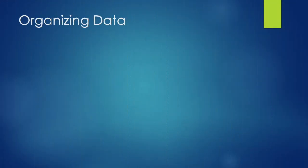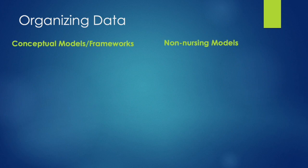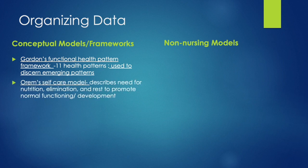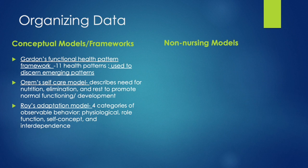Organizing data. You can organize data using conceptual models and frameworks as well as non-nursing models. The first is Gordon's functional health pattern framework, which includes 11 health patterns used to discern emerging patterns for planning nursing care. Next is Orem's self-care model, which describes the need for nutrition, elimination, and rest to promote normal functioning and development. Lastly is Roy's adaptation model, which includes four categories of observable behavior: physiological, role function, self-concept, and interdependence.